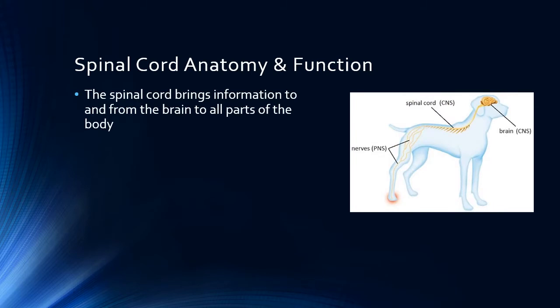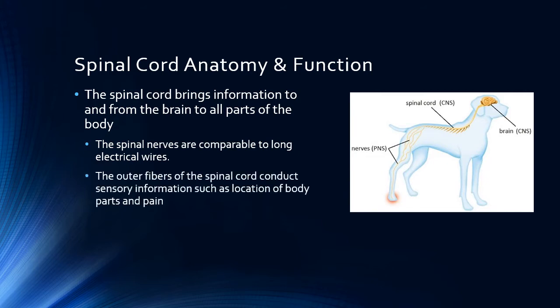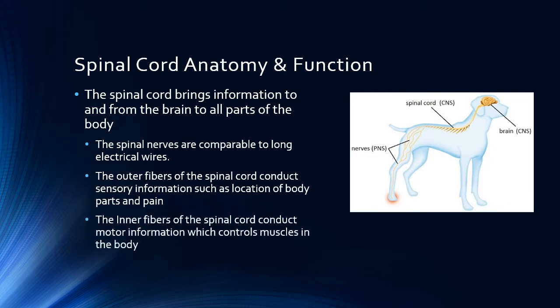The spinal cord connects the brain to the rest of the body. It consists of long cells comparable to electric wires. The nerves of the spinal cord are arranged in layers, with the outer fibers being responsible for sensory information such as location of body parts and pain. Superficial damage to the spinal cord will thus create loss of knowledge of the position of your limbs and pain. The deeper fibers control the motor function of the limbs. If these fibers are damaged, your pet experiences reduction in or total loss of function of one or more limbs.